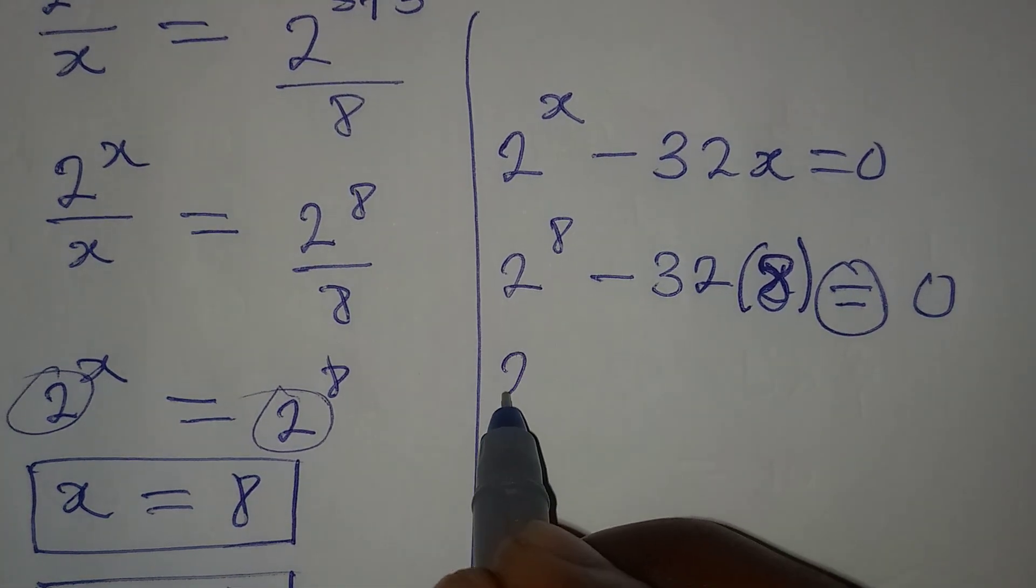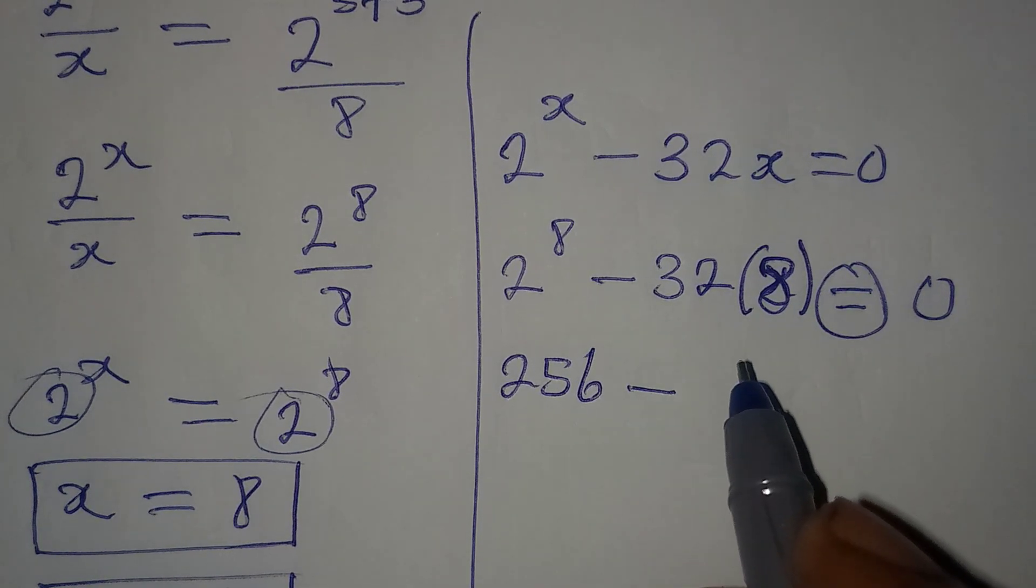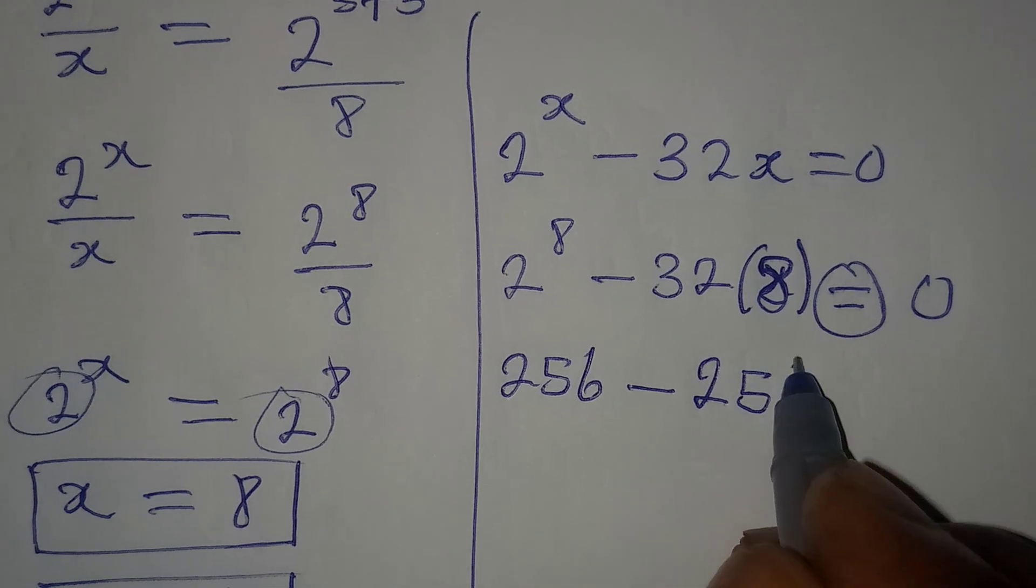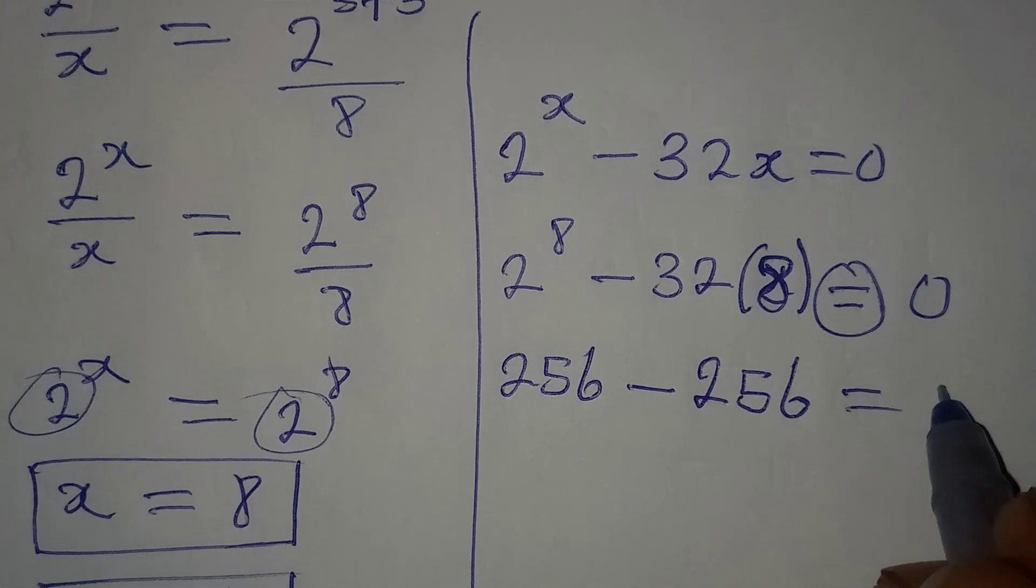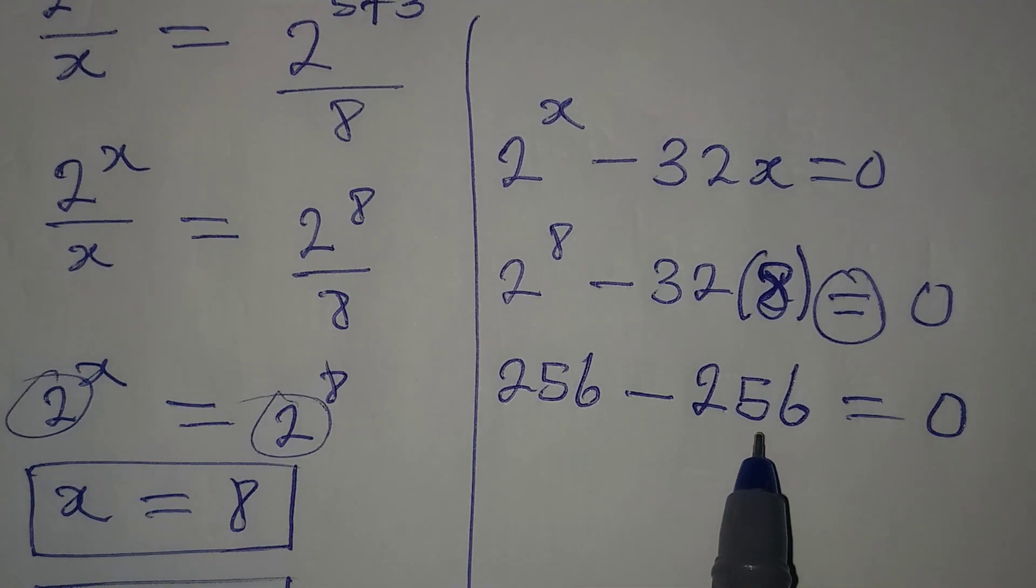Now, 2 to the power of 8 is 256 minus 32 times 8 is 256. And this will give us 0, because 256 minus 256 will give 0.